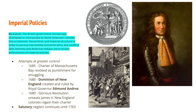The next attempt at greater control came in the form of the Dominion of New England. In 1685, the charter of the Massachusetts Bay Colony was revoked as punishment for smuggling. In 1686, the Dominion was created, merging all the New England colonies into one territory under royal governor Edmund Andros. He was heavily disliked by New Englanders. In 1689, the Glorious Revolution unseated James II, Parliament asked William of Orange to become king, and Edmund Andros was quickly removed. Salutary neglect continued in the colonies until 1763 at the end of the French and Indian War.